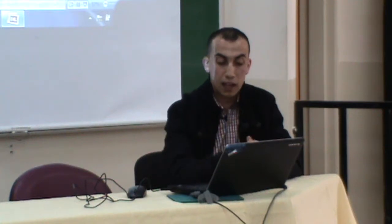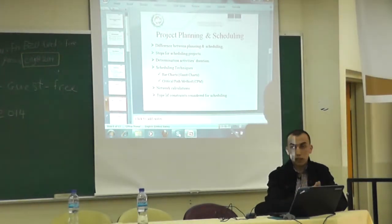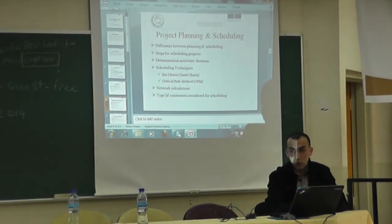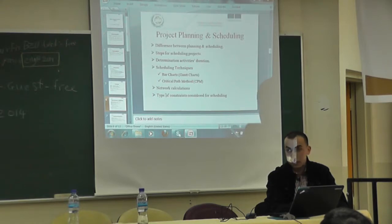After that, we will present steps for scheduling projects. The first step is to determine the activity list, then identify relationships between activities and determine activity duration. Activity duration can be obtained by dividing the quantity of any item by productivity to get the duration in hours or days. Scheduling techniques use either a bar chart or CPM, especially the precedence diagramming method, which is most common today.